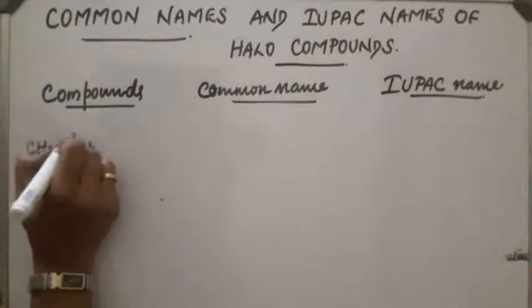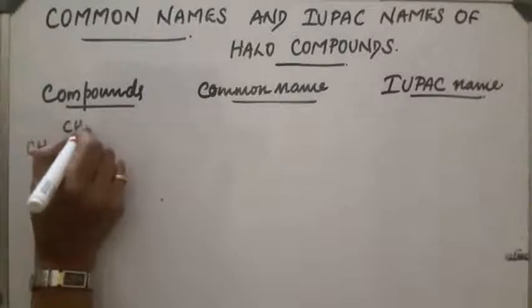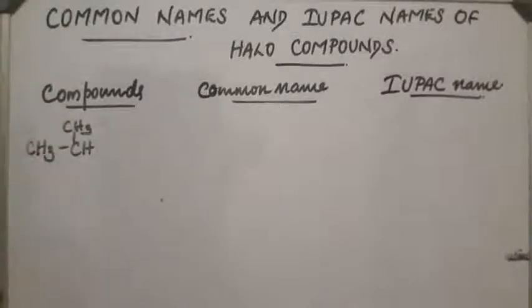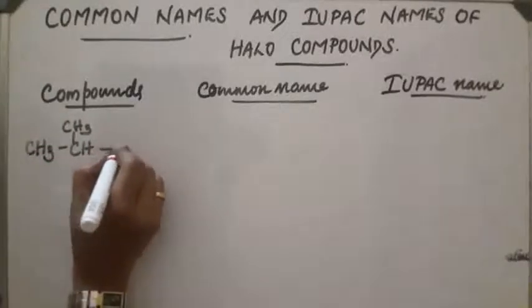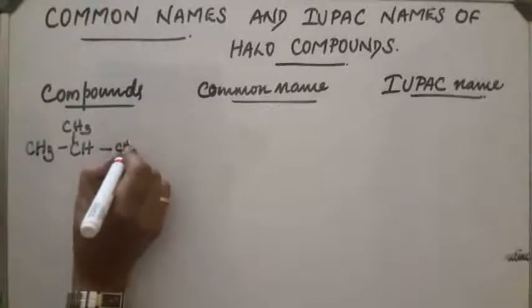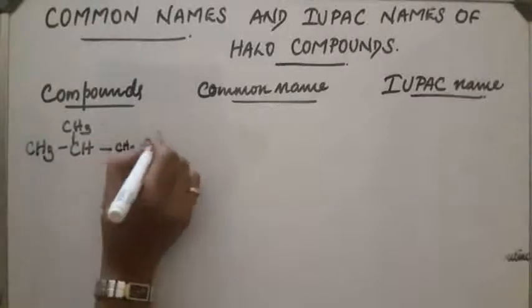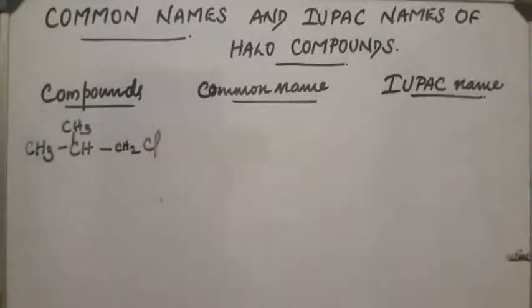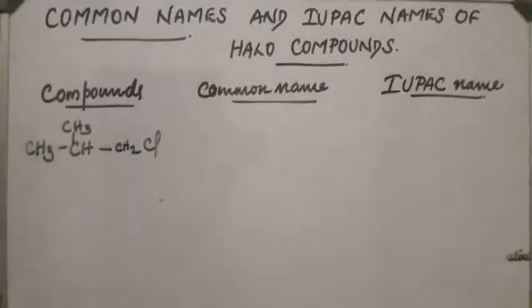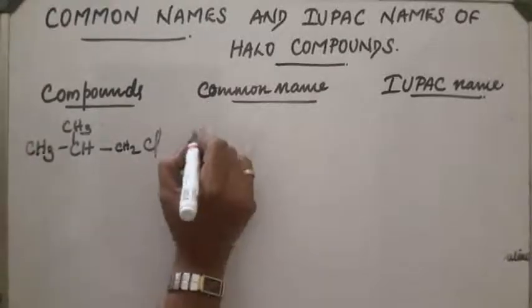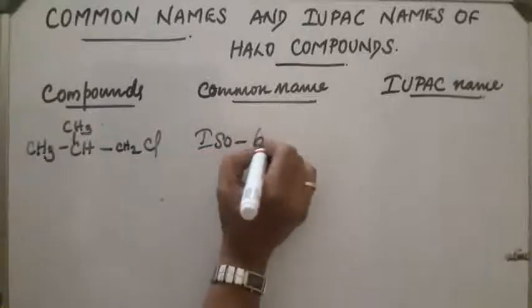Next compound: the structure has a CH3CH3 backbone with a CH2Cl group. There is a CH3 branch, so the common name is isobutyl chloride.